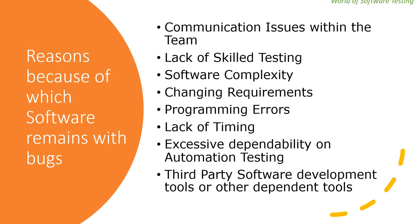The third reason is software complexity. Software complexity is another reason why most software remains with bugs. Some software includes multiple modules and sub-modules and is very complex by nature. Developers may not be able to fix code due to such complexity, and if unable to fix within the stipulated time, the tester needs to defer it for the particular release. In such cases the bugs get passed to production. Using object-oriented languages can sometimes make code unnecessarily complex, which leads to bugs.